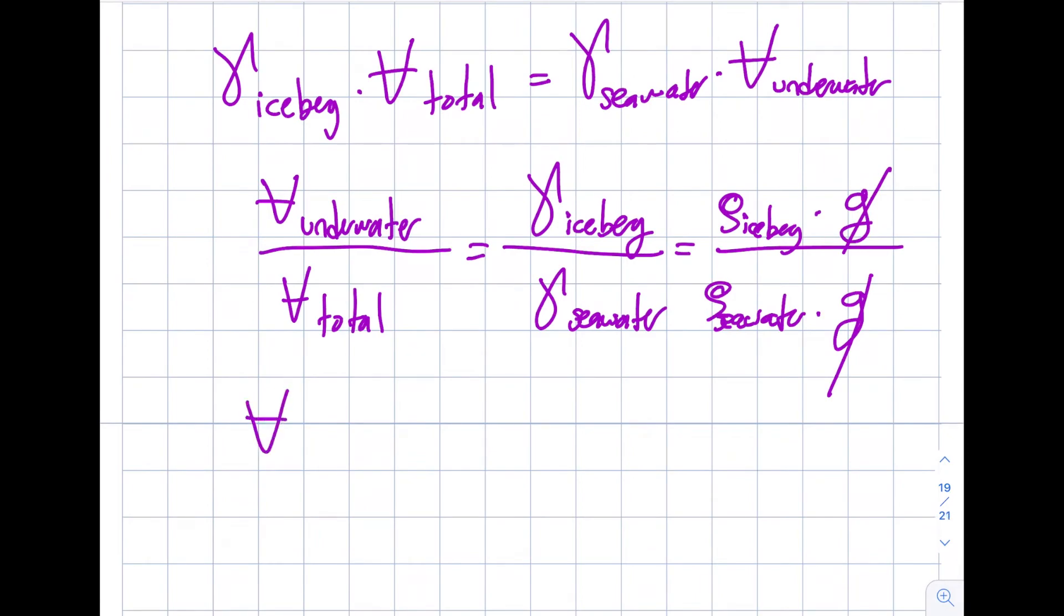So basically I get V_underwater per V_total as density of iceberg divided by density of seawater.